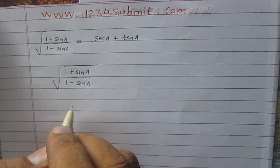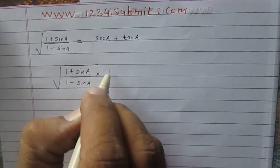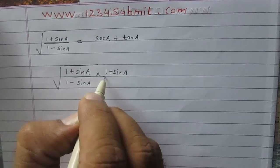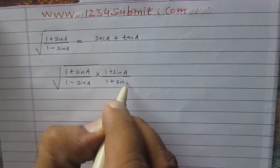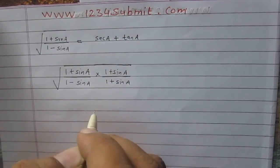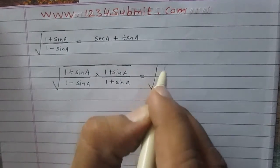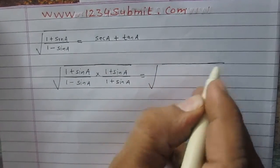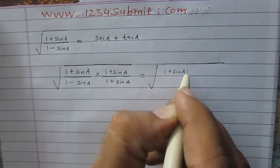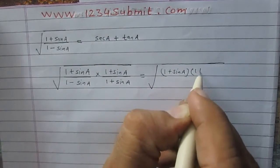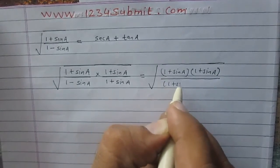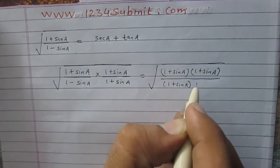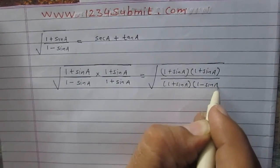Here we will multiply the numerator and denominator both by (1 plus sin a). So I am multiplying the numerator by (1 plus sin a) and also the denominator by (1 plus sin a). On simplifying, (1 plus sin a) is multiplying with (1 plus sin a) in the numerator, and in the denominator (1 plus sin a) is multiplying with (1 minus sin a).